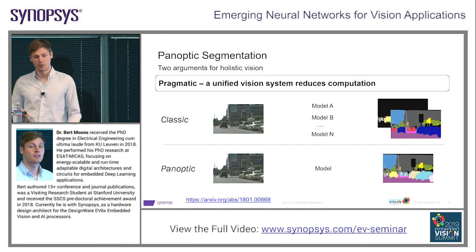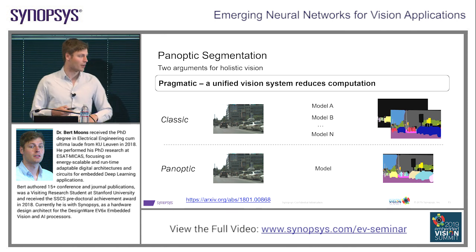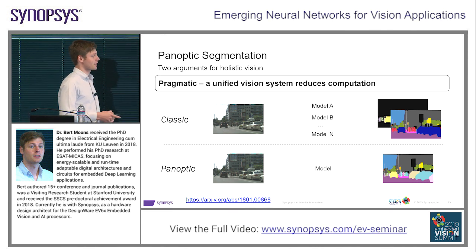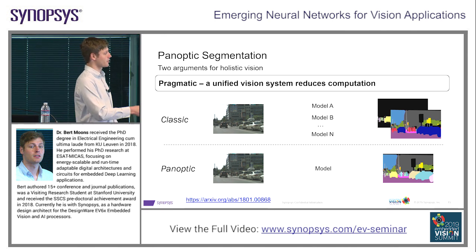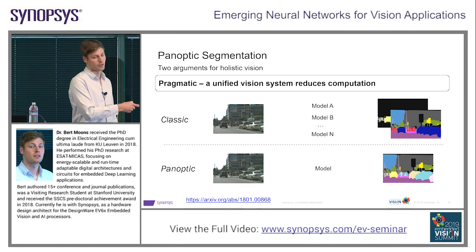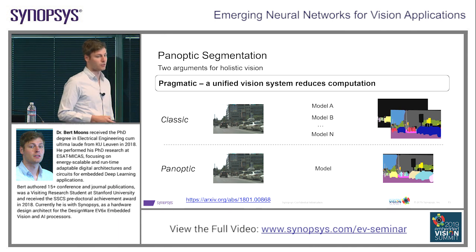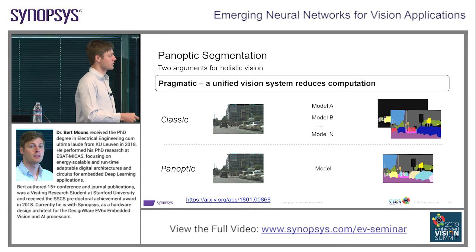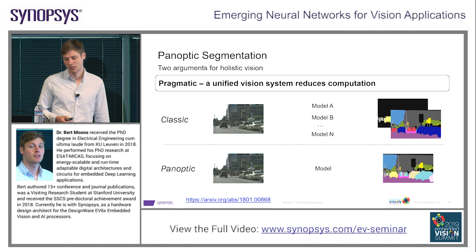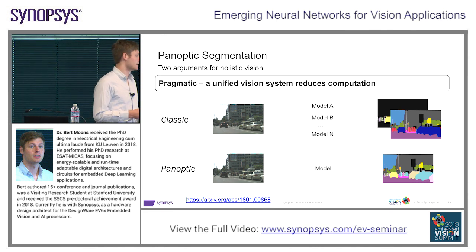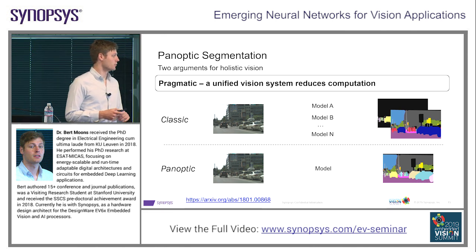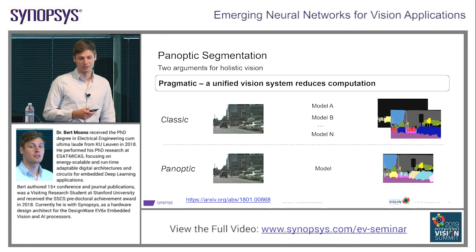In the classical approach where you have different neural networks for every task, this will actually cost you a lot in terms of energy consumption, or you will not be able to run it in real time. For every subtask, you needed a separate model to execute that. In panoptic vision, we unify that in a single model, which will enable us to really go to real-time embedded vision.